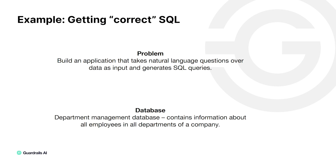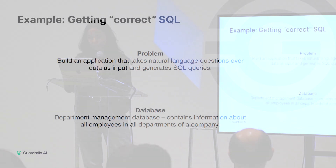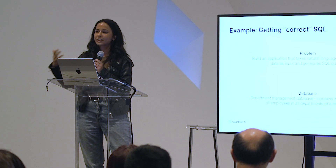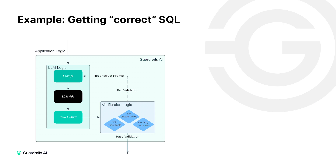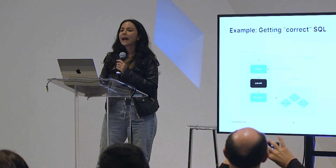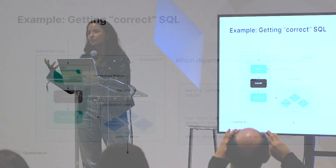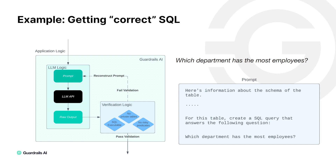I'm going to showcase this with an example of getting correct SQL. The problem is that you are building an application that takes natural language questions over your data as input and you want to generate SQL queries. The database here is department management — it contains department counts, number of employees, etc. The application-specific tests in the verification suite are: the SQL is executable for your database, there are no private tables referred to in the generated query, and there are no risky predicates — so even if a user asks you to delete a table, you're not generating and running a DROP TABLE query.